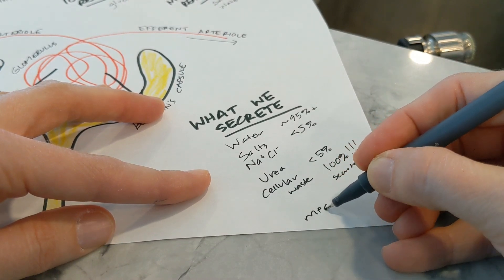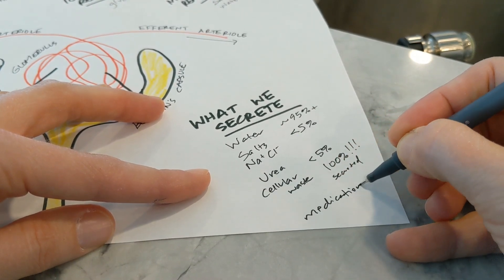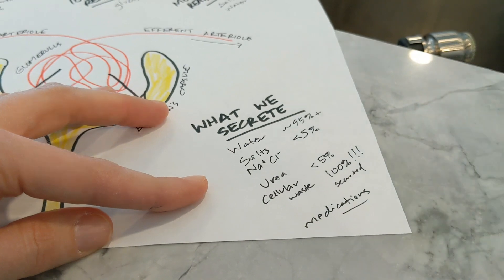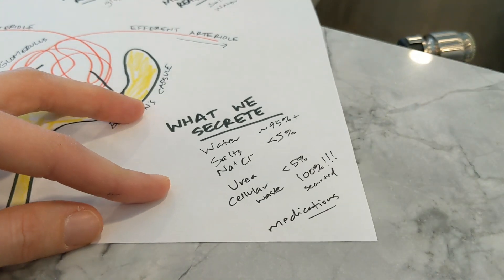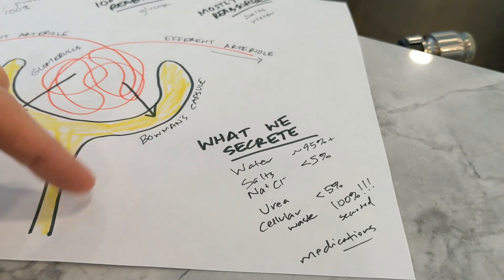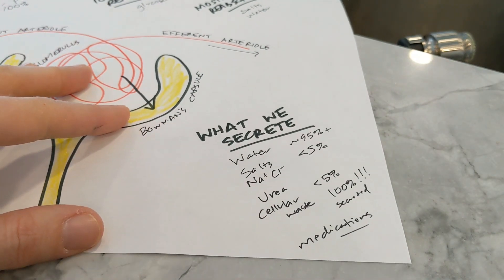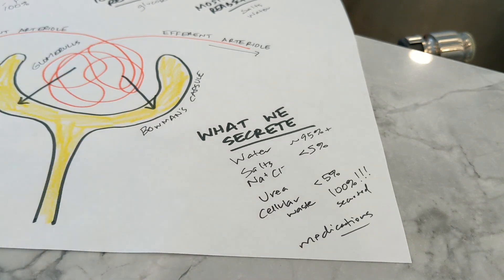The final thing I want to mention is that medications do come out. So the reason you have to keep taking ibuprofen for a headache is that it gets filtered out through our kidneys. And if you're taking lots of medication, it can be hard on your kidneys to do all that filtering.